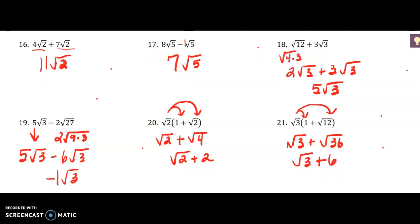Something new: in this next row we are combining using addition or subtraction. Remember this is like combining like terms — just like when you have 2x plus 4x you get 6x, you add the coefficients but keep the like variable. Same thing with radicals: in order to combine by adding or subtracting, you have to have exactly the same radicals. Here I have 4 square roots of 2 and I'm adding 7 more square roots of 2, so altogether I have 11 square roots of 2.